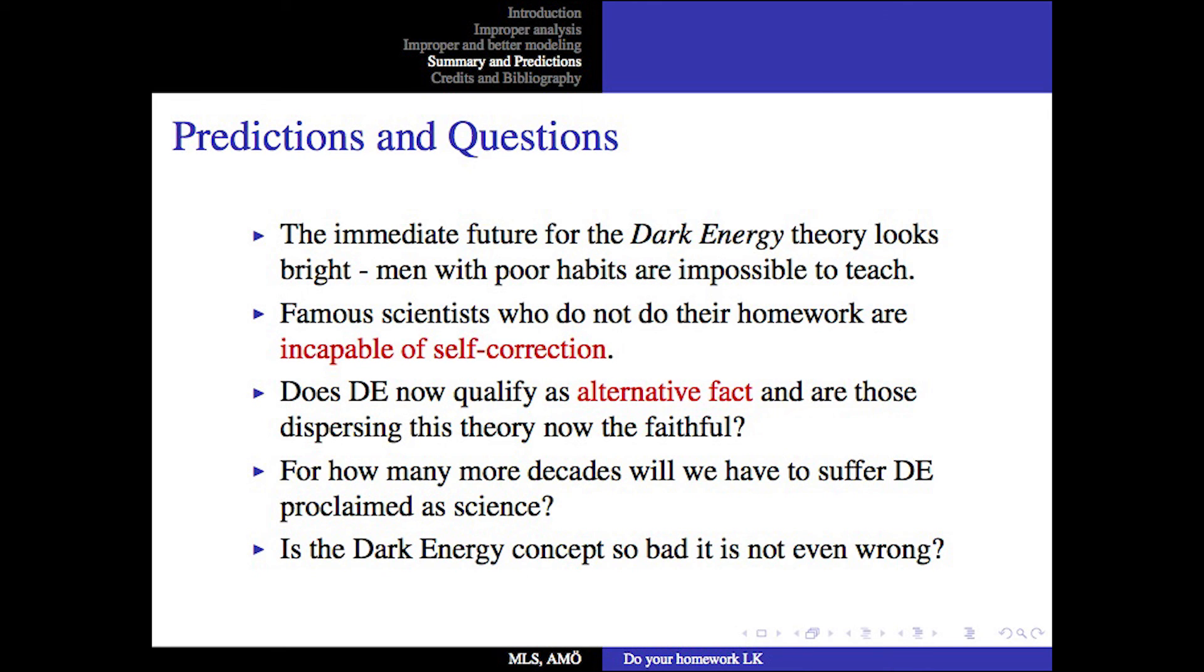Here are some predictions and some questions. The immediate future for dark energy theory looks bright. Men with poor habits are impossible to teach. Famous scientists who do not do their homework are incapable of self-correction. Does dark energy now qualify as an alternative fact? And are those dispersing this theory now the faithful? For how many more decades will we have to suffer dark energy proclaimed as science? Is the dark energy concept so bad it is not even wrong?